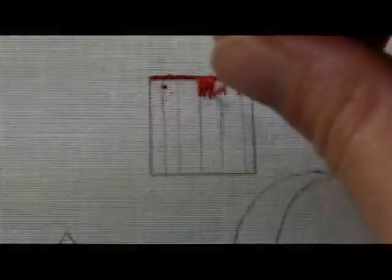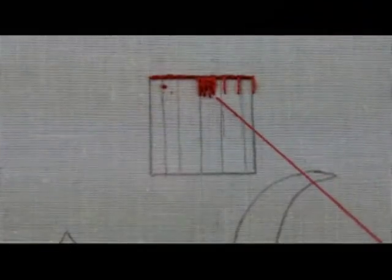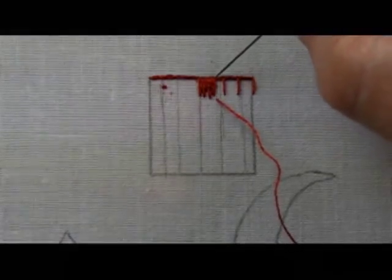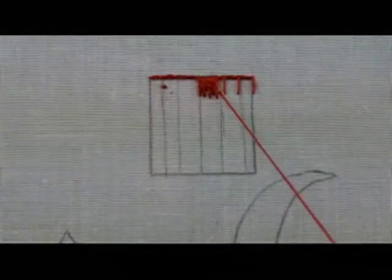At the same time you don't want too many short stitches right next to each other, too many long stitches right next to each other. Just try to vary them as you work across the line. Notice that I went back to the middle and I'm working to the right. When I finish this section I'm going to move back to the middle and work to the left.